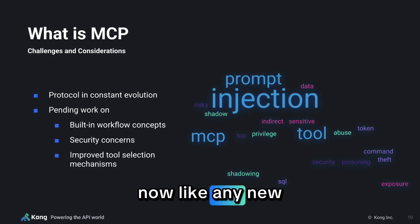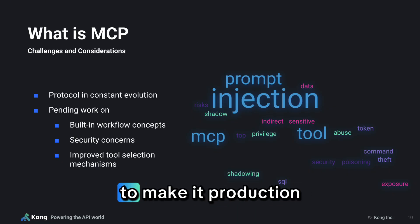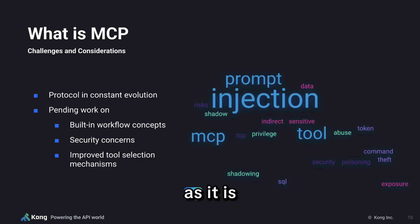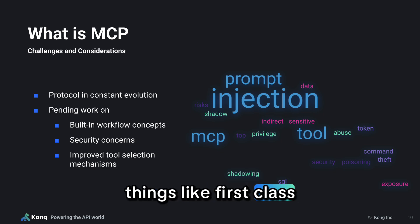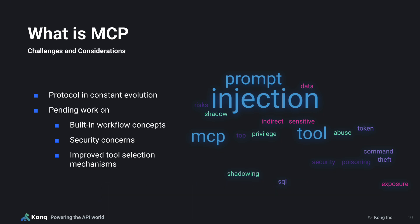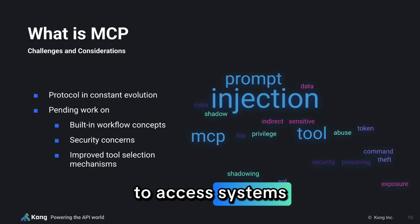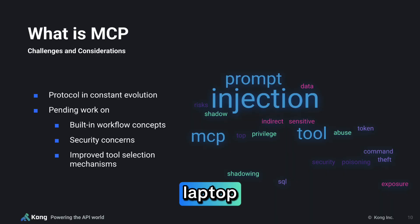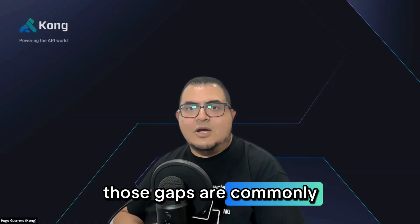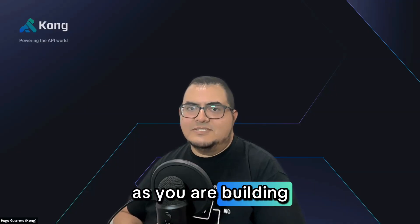Now, like any new protocol, MCP still has room to grow. It's evolving fast, but it's missing some things to make it production and enterprise ready as it is. Things like first-class workflow support, better tool selection logic, and more polished and robust security features to access systems beyond your laptop. Those gaps are commonly overlooked in a prototype, but not in a business-critical production system.